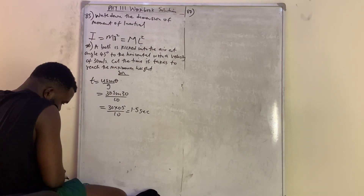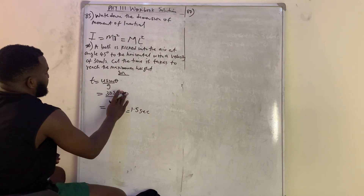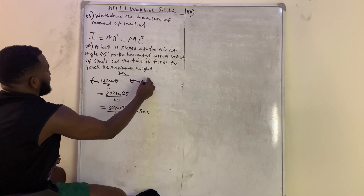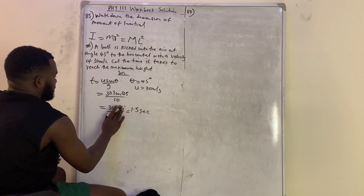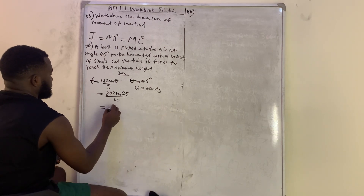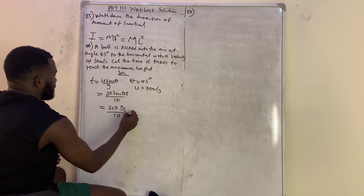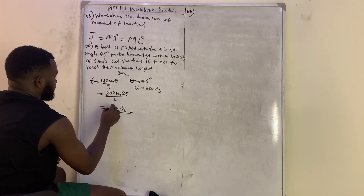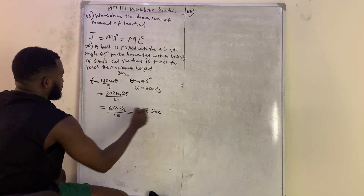Sorry — theta is 45 degrees and u equals 30 m/s, so this becomes 30 times (root 2 over 2) divided by 10. Zeros cancel, leaving 3 over 2 root 2 seconds. You can use your calculator to get the decimal answer.